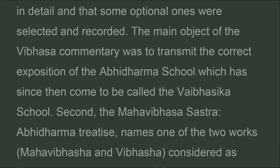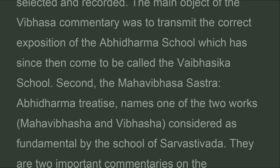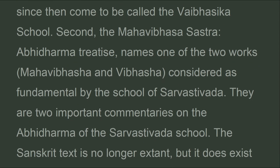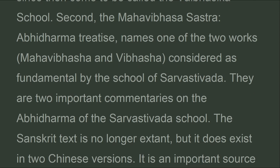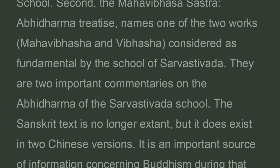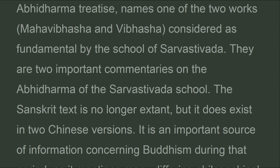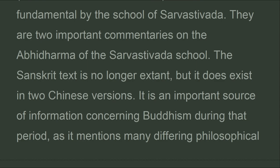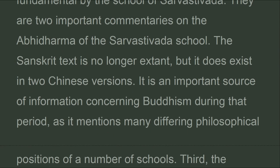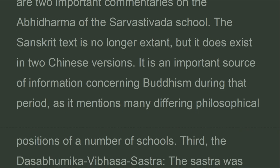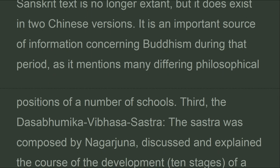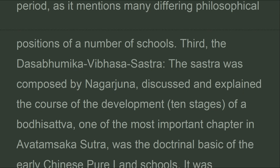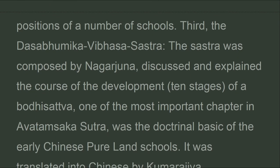The main object of the Vibhasa commentary was to transmit the correct exposition of the Abhidharma school, which has since come to be called the Vibhashika school. Second, the Mahavibhasa Sastra — one of the two works (Mahavibhasa and Vibhasa) considered fundamental by the Sarvastivada school. The Sanskrit text is no longer extant but exists in two Chinese versions and is an important source of information about Buddhism during that period. Third, the Dasabhumaka Vibhasa Sastra, composed by Nagarjuna, discussing and explaining the course of development of the ten stages of a bodhisattva.